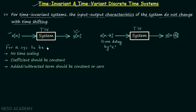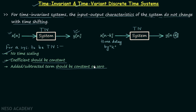For a system to be time invariant, three conditions must be satisfied. According to the first condition, there should be no time scaling. According to the second condition, the coefficients in the system relationship should be constant. According to the third condition, if there is any added or subtracted term in the system relationship, it should be constant or zero.